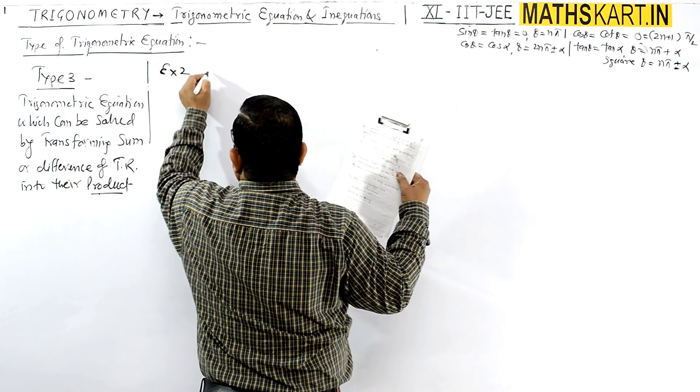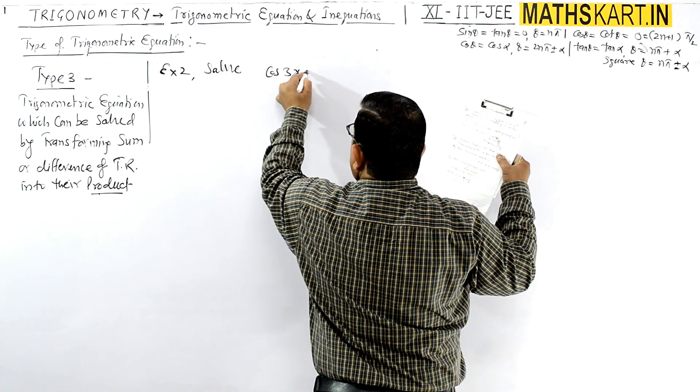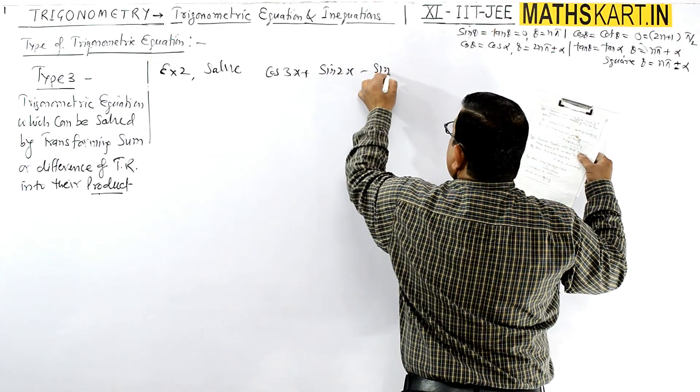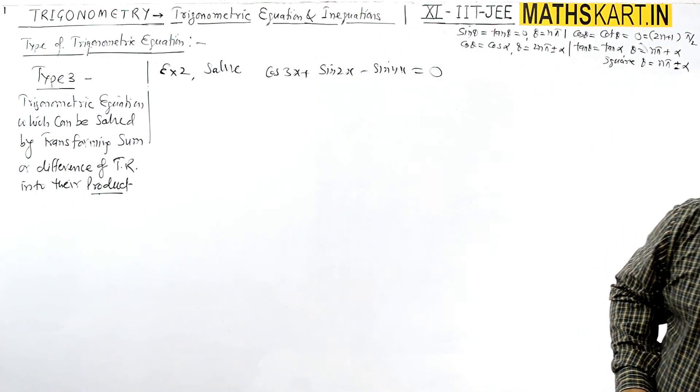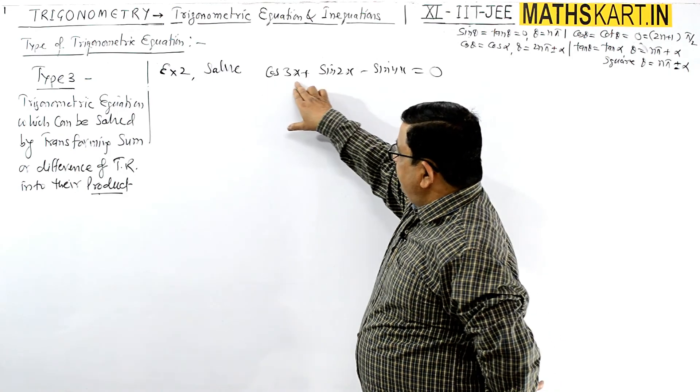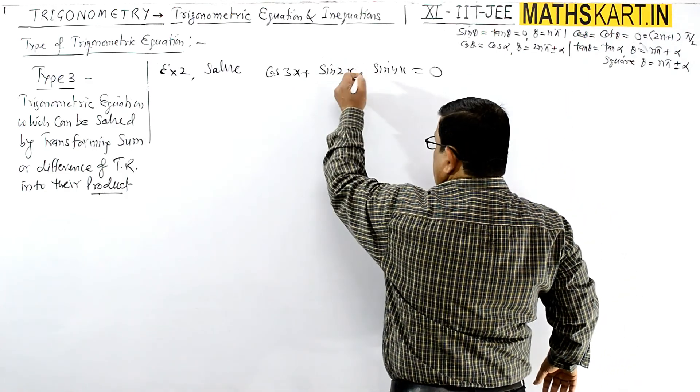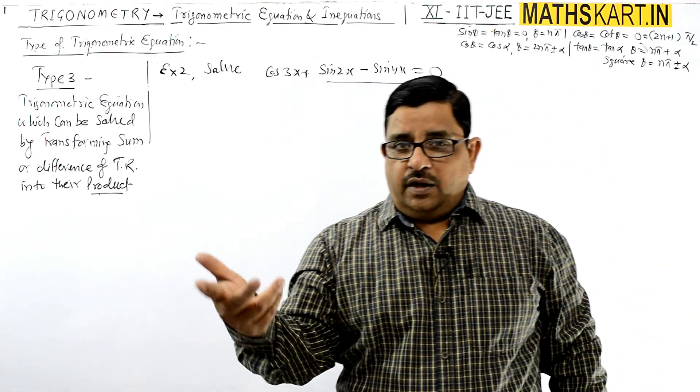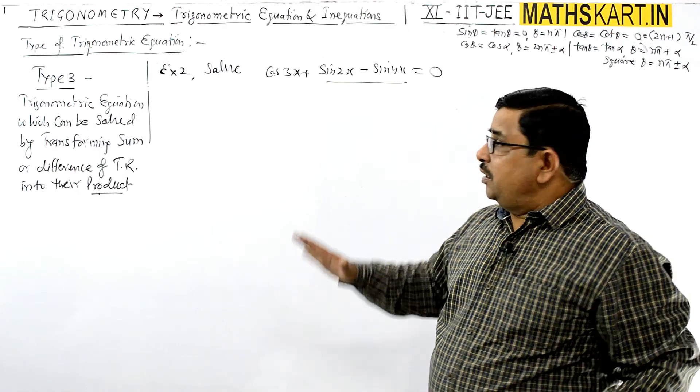This is example 2. Solve: cos 3x + sin 2x - sin 4x = 0. Again, see which two terms to combine. Cos is a different form, and these two are both sine, so these two will merge together. Because this is 2x and 4x, when they add and divide by 2, we get 3x, and 3x is already our angle here.